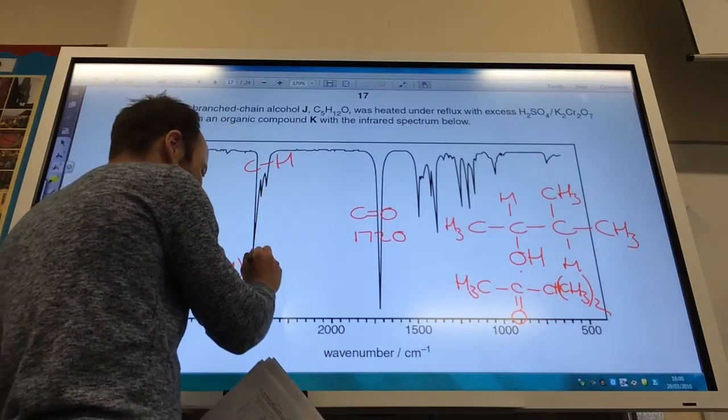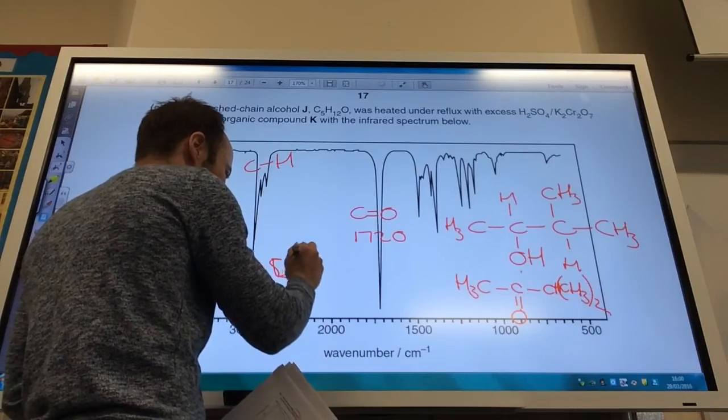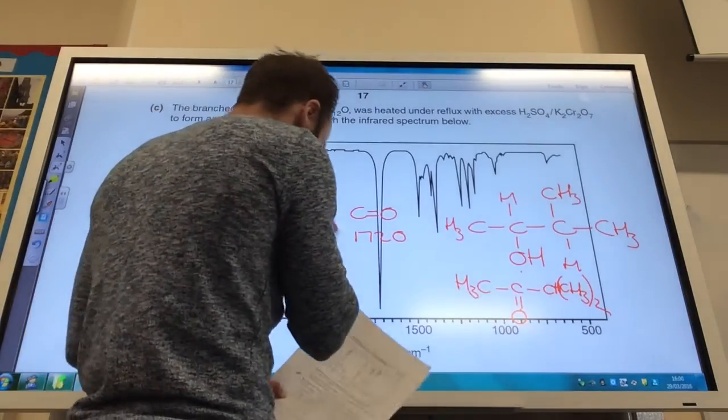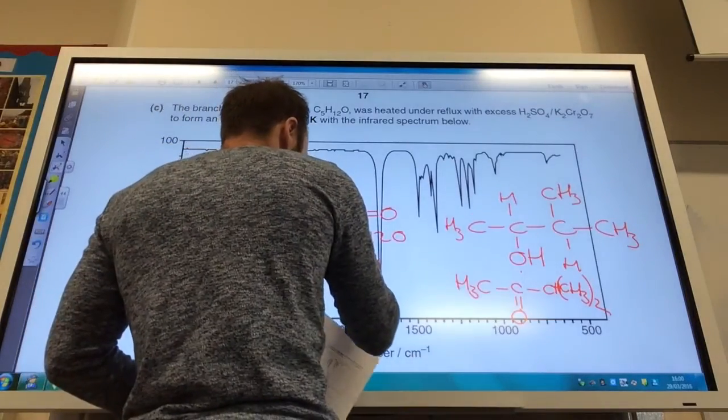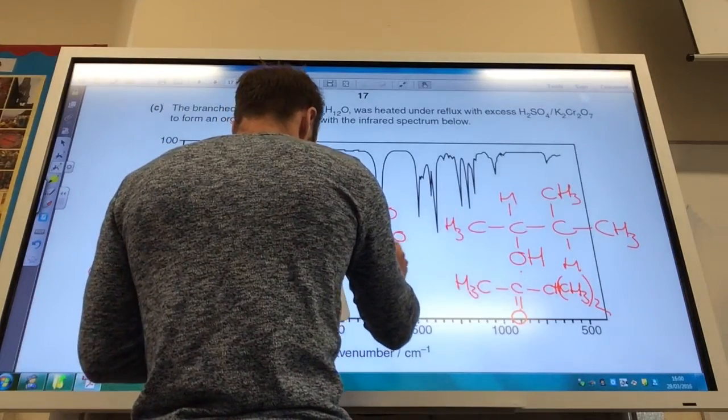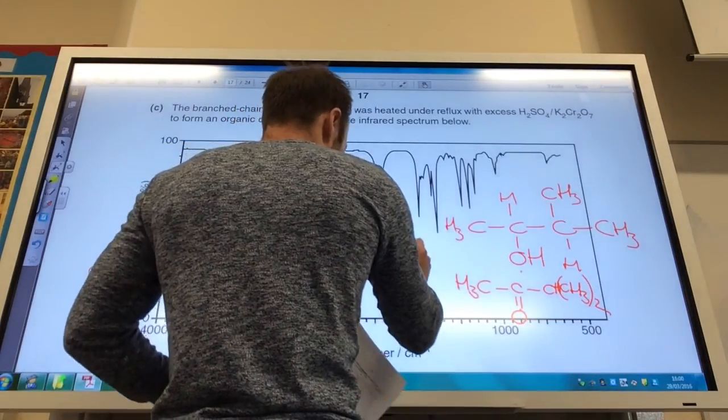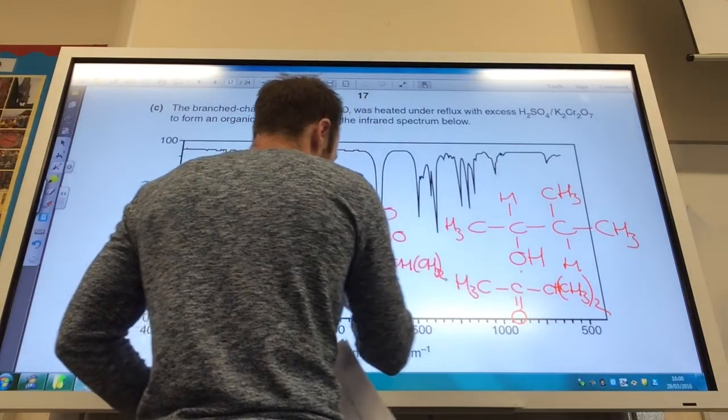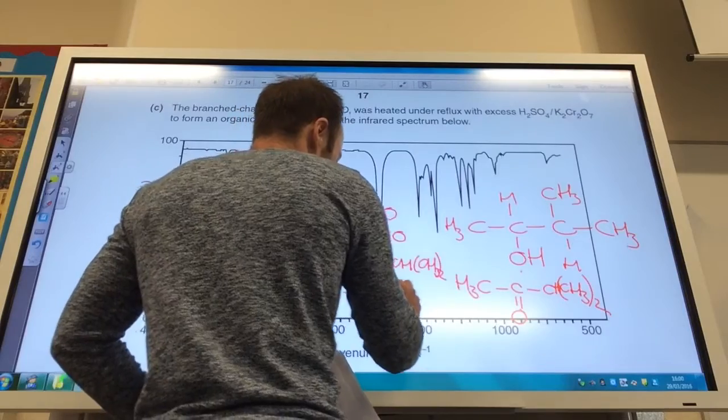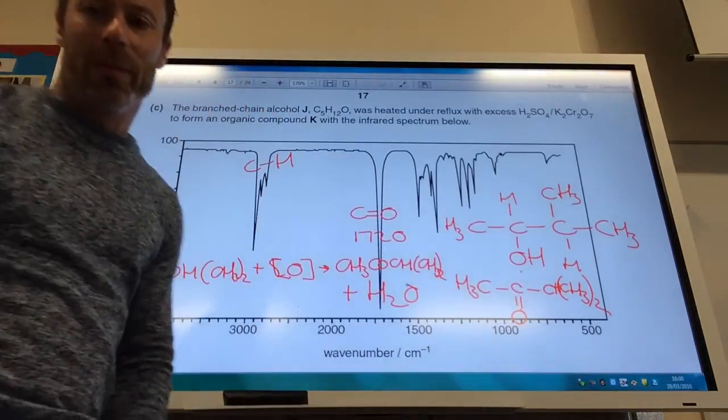Okay, and then finally they want the equation. So, I've got CH3, CHOH, and then CH3 twice. I'm making a ketone. So, that square bracket O to represent an oxidizing agent to give me CH3COCHCH3 twice plus your water as well that you make.